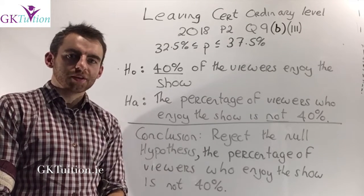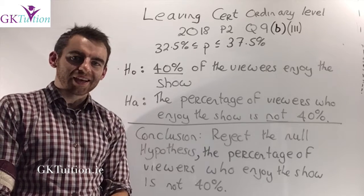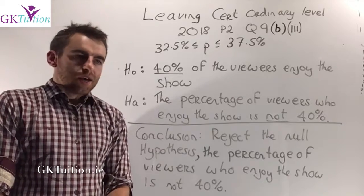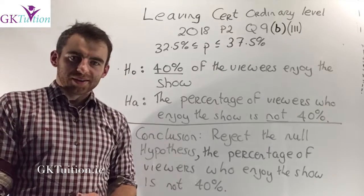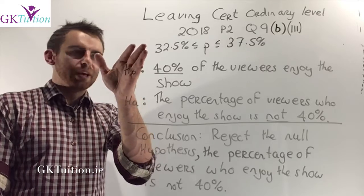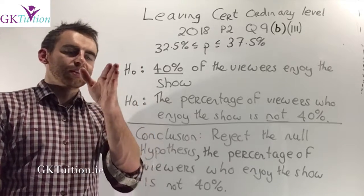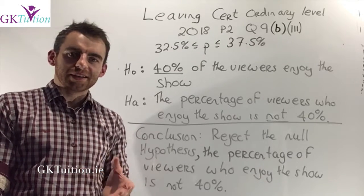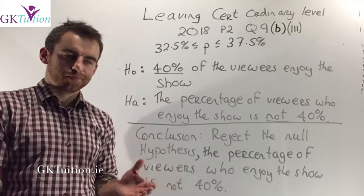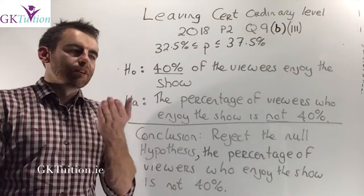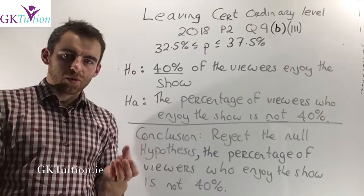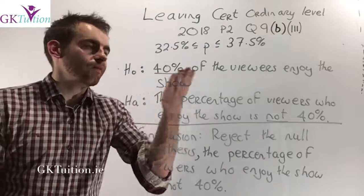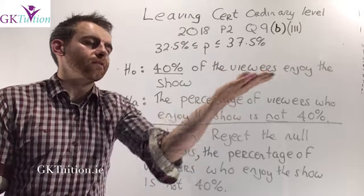For the final part of this question we're told that an executive claimed that 40% of the viewers enjoy this show. We're asked to conduct a hypothesis test based on our previous work to state the null hypothesis, state the alternative hypothesis and make a conclusion to investigate if the executive's claim is true. If the executive claims that 40% of the viewers enjoy the show, our null hypothesis H₀ is that we agree with him—40% of the viewers enjoy the show.